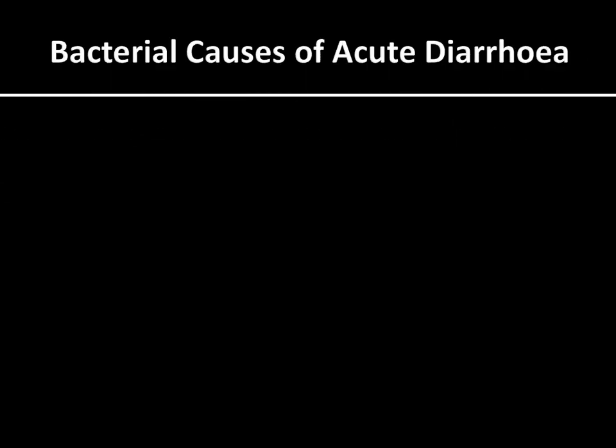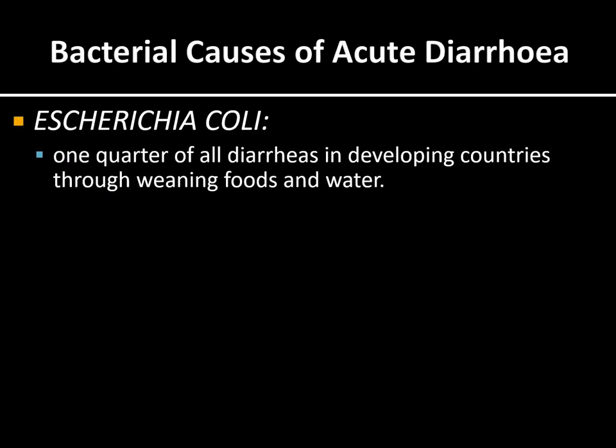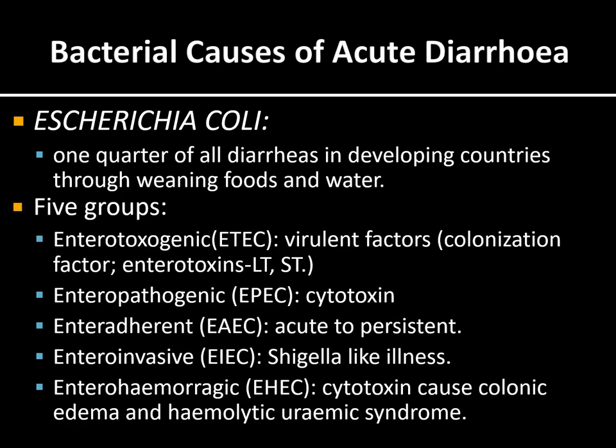Regarding bacterial causes of acute diarrhea: E. coli causes one quarter of all diarrheas in developing countries because of lack of sanitation. There are five groups — enterotoxigenic, enteropathogenic, enteroadherent, enteroinvasive, and enterohemorrhagic — each with slightly different mechanisms of pathogenesis.